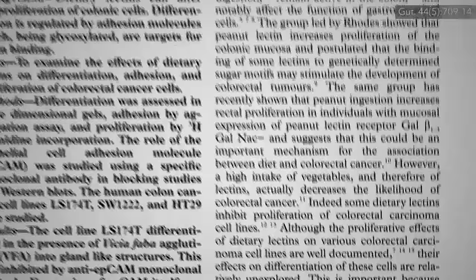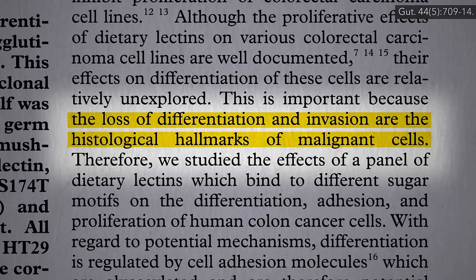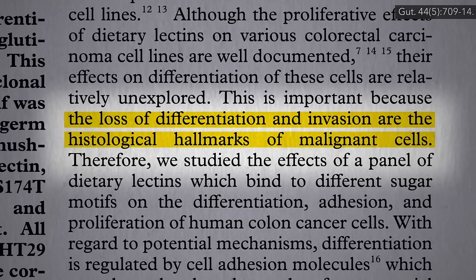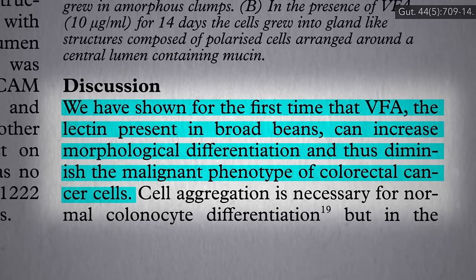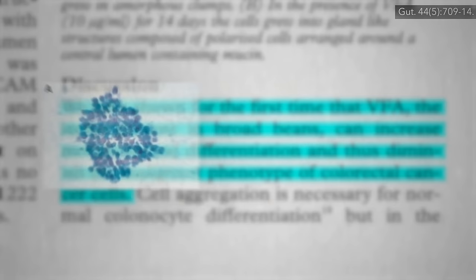Or even more exciting, the potential for effectively rehabilitating cancer cells. The loss of differentiation and invasion are the hallmarks of malignant tissues, meaning that when a normal cell transforms into a cancer cell, it tends to lose its specialized function. Breast cancer cells become less breast-like. Colon cancer cells become less colon-like. And what these researchers showed for the first time is that the lectin in fava beans could take colon cancer cells and turn them back into looking more like normal cells.